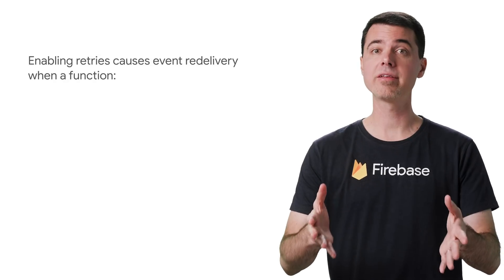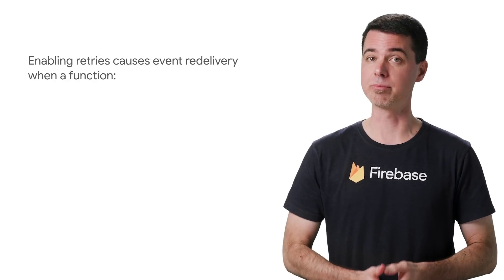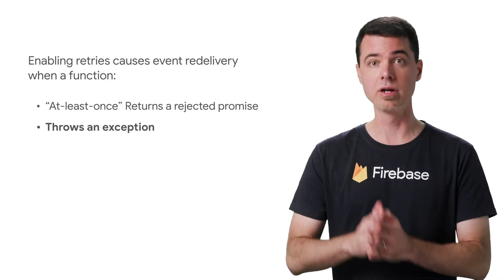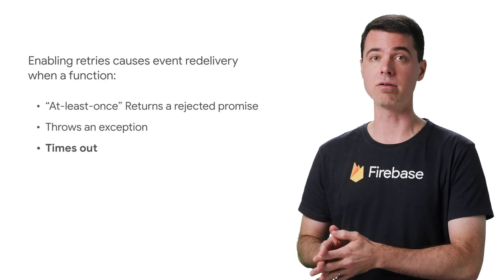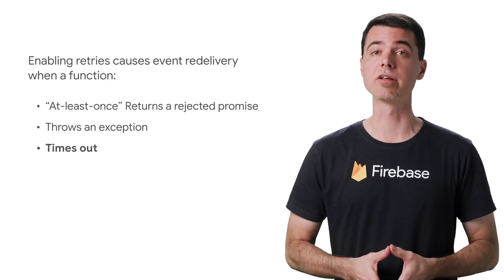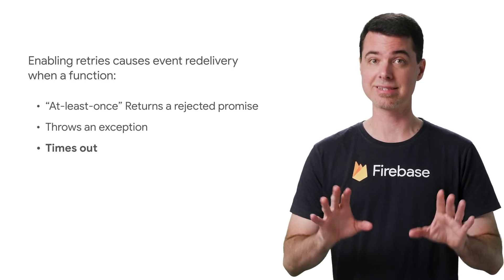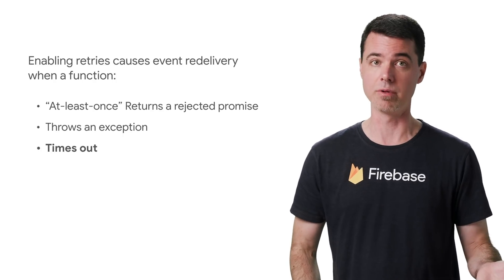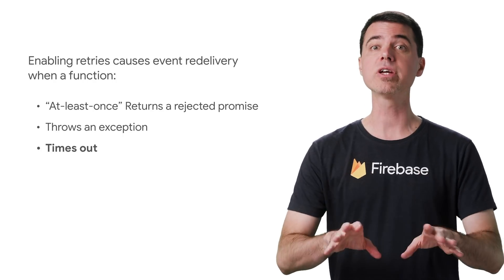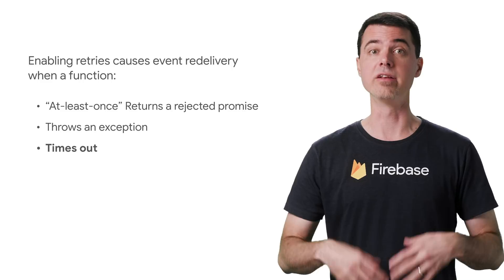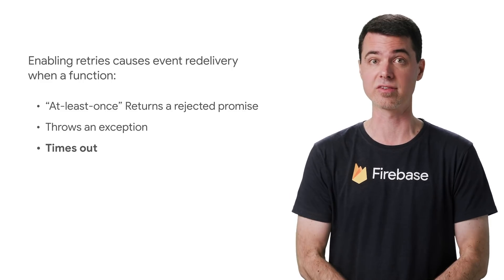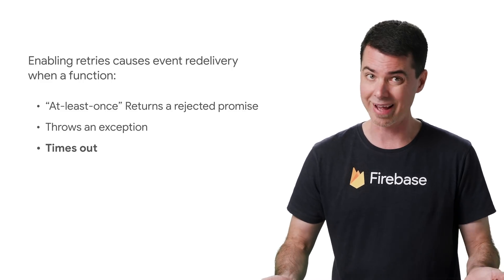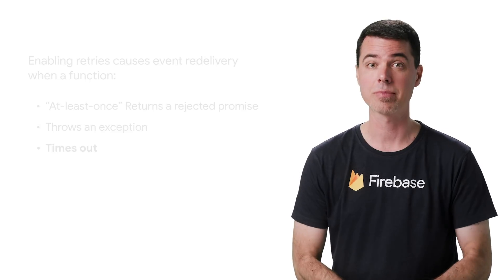With retries enabled, if your function terminates by returning a rejected promise, throws any exception, or timing out, Cloud Functions will arrange to deliver the exact same event again with the hope that whatever caused the problem was just temporary. It'll retry the delivery until your function finally terminates successfully, or the retry window expires, which could last days.